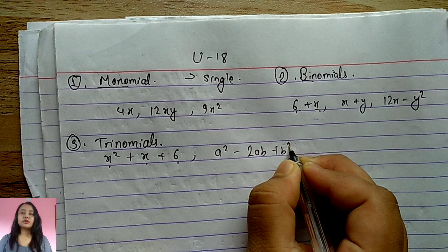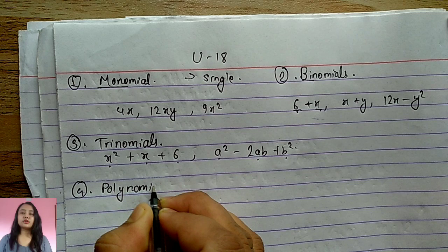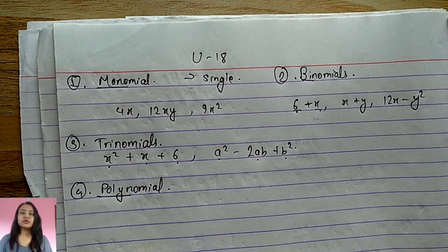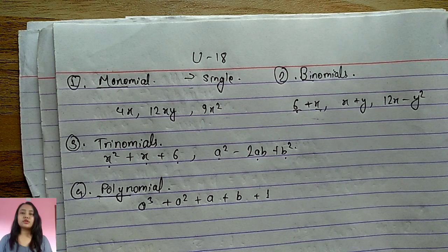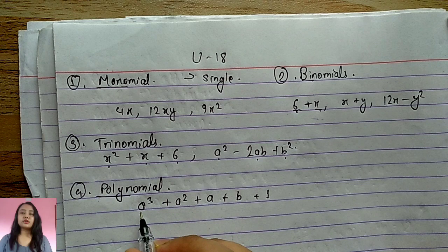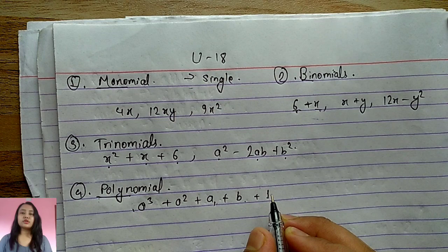The next type is the polynomial. The prefix 'poly' means many, so a polynomial has many terms — like a³ + a² + a + b + 1. The polynomial must have at least four or more terms to be classified as a polynomial.